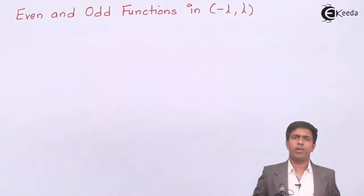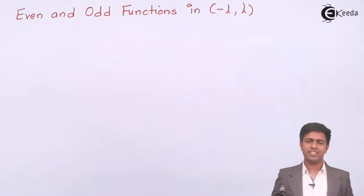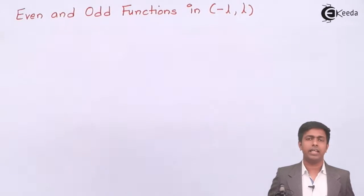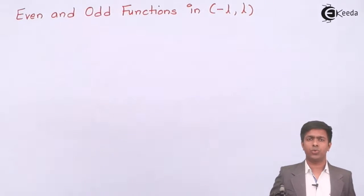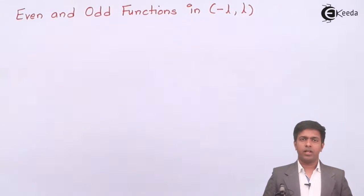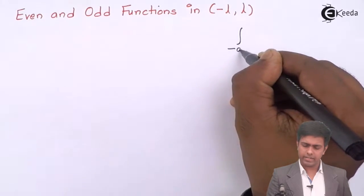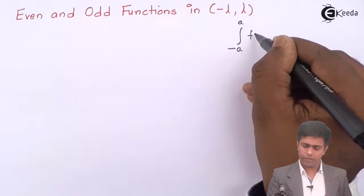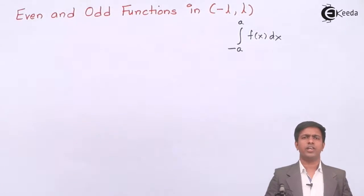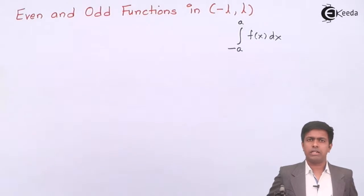Now we are going to start with one of the most important concepts of Fourier series - even and odd functions in the interval minus l to l. Let me ask you a basic question: if we have an integration from minus a to a for a function f of x dx, what is the shortest way to get the answer?